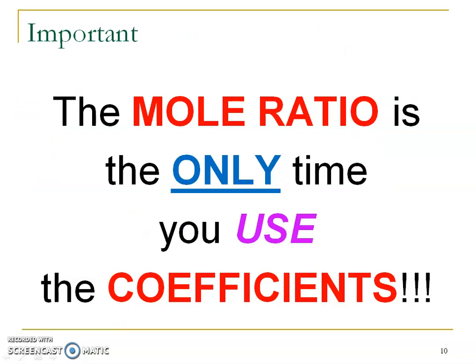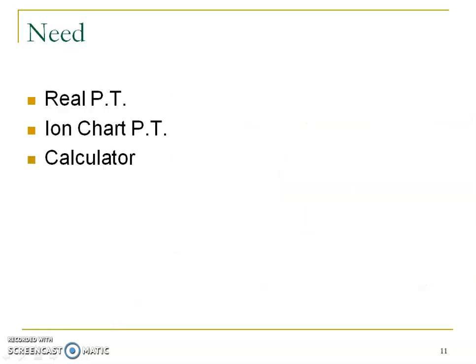The most important thing to remember is that the mole ratio is the only, only, only time to use those coefficients. We're not going to use those coefficients any other time except for that one middle conversion factor. Any other time — like when we used mole island — what number always went with mole? One. So you're going to need your real periodic table, your ion chart periodic table, and a calculator if you don't already have those out.